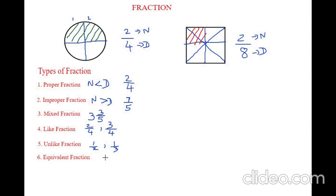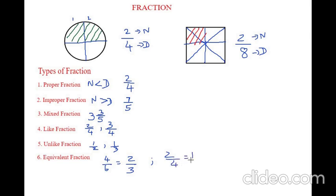Equivalent fractions are fractions that are equal when simplified to their lowest form. So 4 by 6 is equal to 2 by 3. You can also say that 2 by 4 is equal to 1 by 2. So these are equivalent fractions.